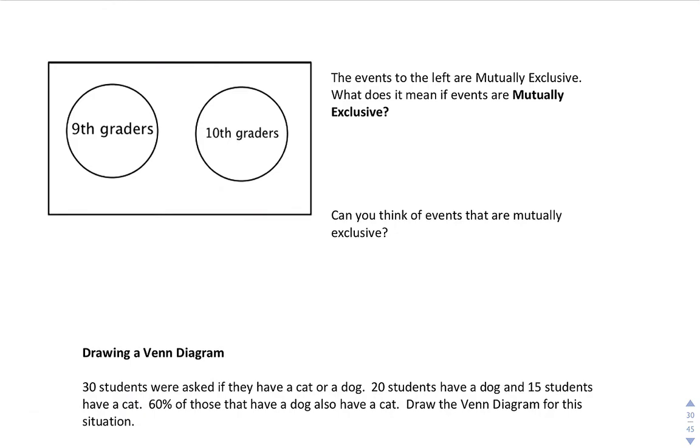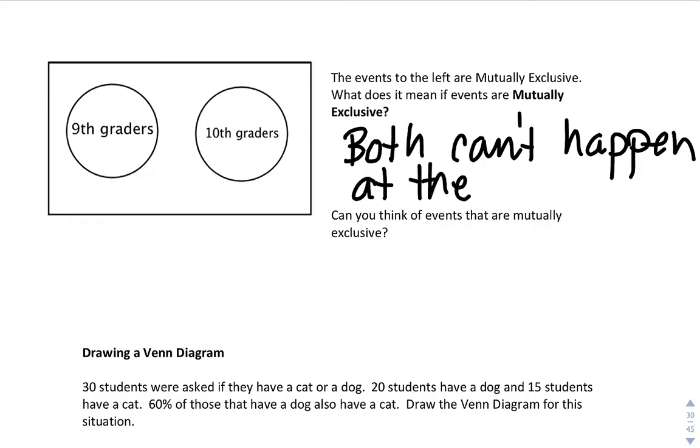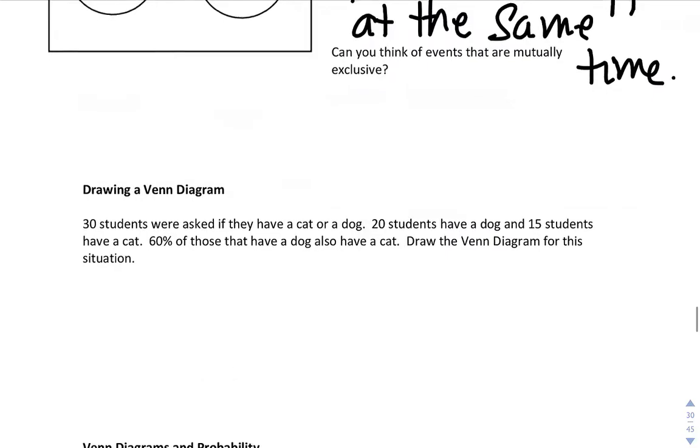Okay. Now we look at mutually exclusive. The events on the left are mutually exclusive. What does it mean if they are mutually exclusive? So if you take a look, we have 9th graders, we have 10th graders. Mutually exclusive means it can't be in both sets. So both can't happen at the same time. Can you think of events that are mutually exclusive? What can not happen at the same time? So for example, you can't be a dog and you can't be a cat at the same time. You can't be asleep. You can't be awake at the same time and so on.